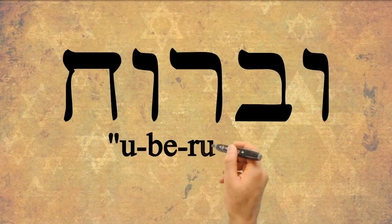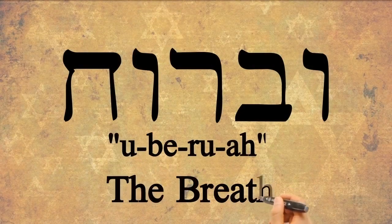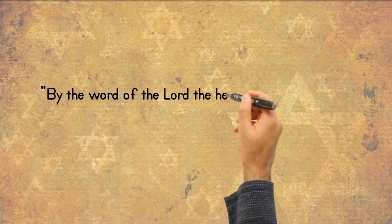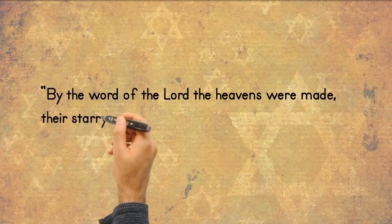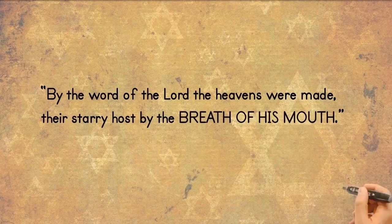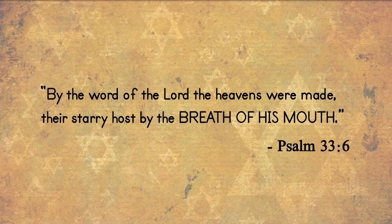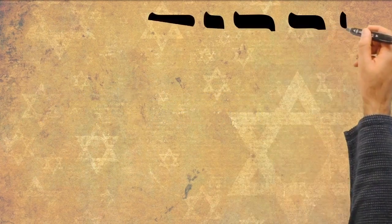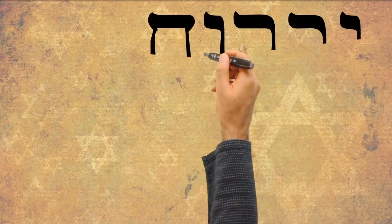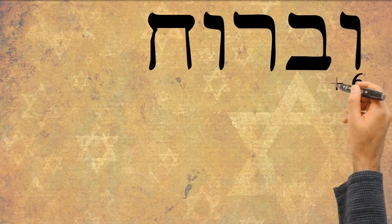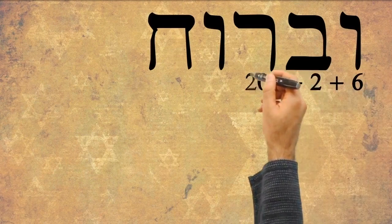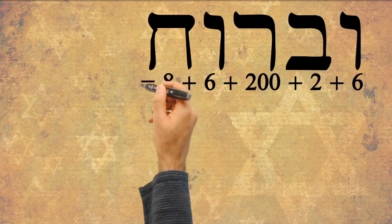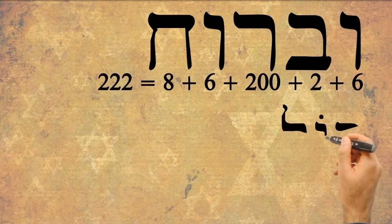During the first day of creation, the breath of God is mentioned five times. It is the Hebrew word uberuach. Psalm 33, verse 6 explains: By the word of the Lord the heavens were made, their starry host by the breath of His mouth. When we look at the total numeric value of this word, we have 6 plus 2 plus 200 plus 6 plus 8, which equals 222.